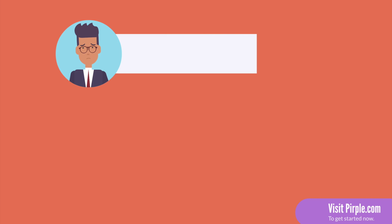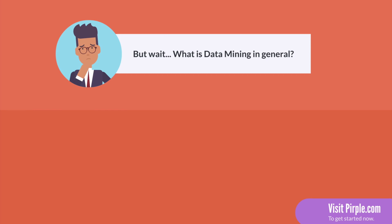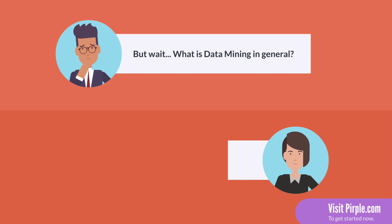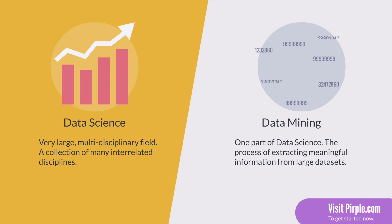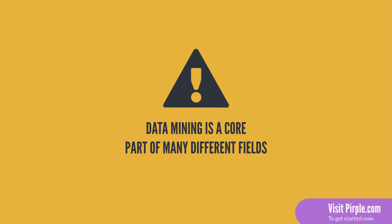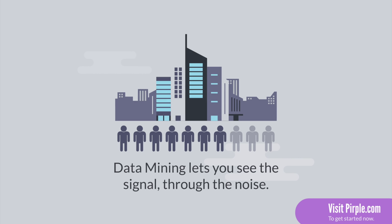You might be wondering: what is data mining in general? Is that different from data science? Let's start with a clear definition. Data science is a huge field — it's multidisciplinary and covers a wide range of topics like predictive modeling, big data analytics, and many others. Data mining is a subcategory within data science that deals narrowly with the process of extracting meaningful information from large data sets. Data mining is a core part of many disciplines, and the techniques are applicable to everything from biostatistics, to day trading, to AI and machine learning. Data mining is the set of core competencies involved in seeing the signal when everyone else just sees the noise.